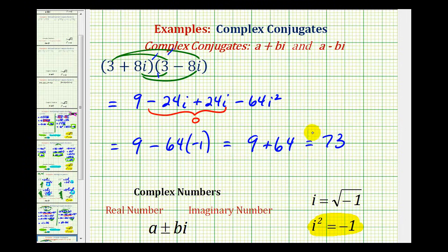So the product of complex conjugates will always result in a real number. And this will be important when dividing complex numbers or when we have a fraction with a complex number in the denominator, which we'll see in the next video.